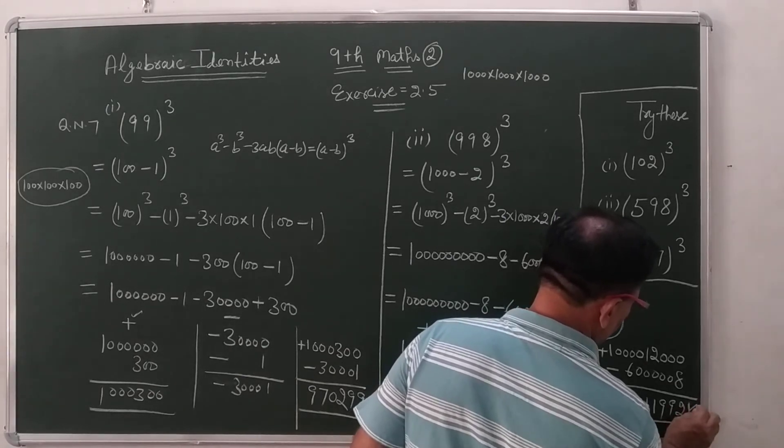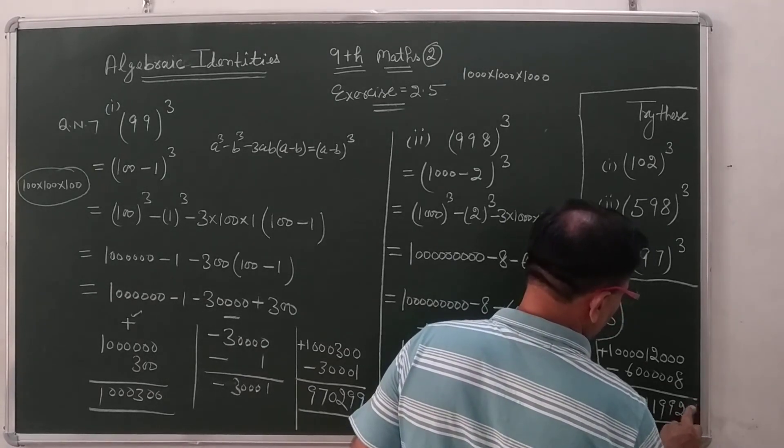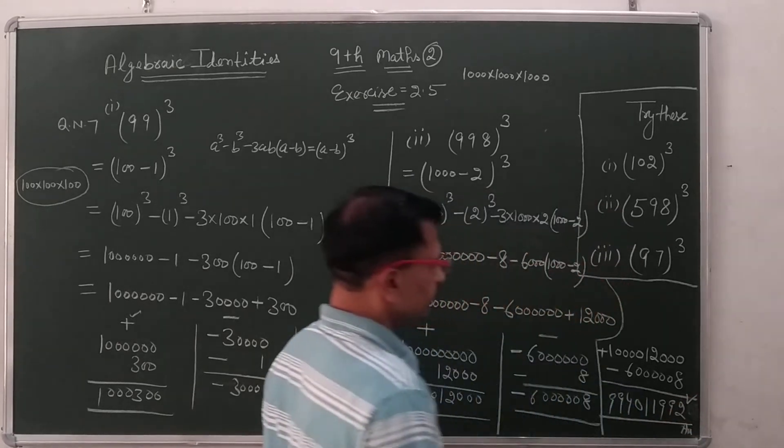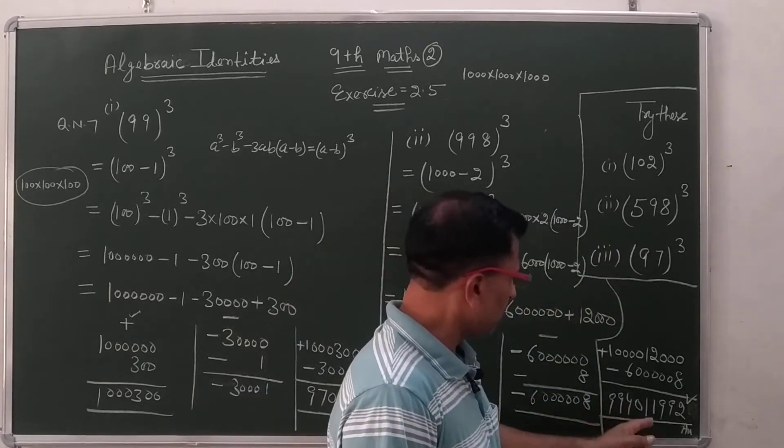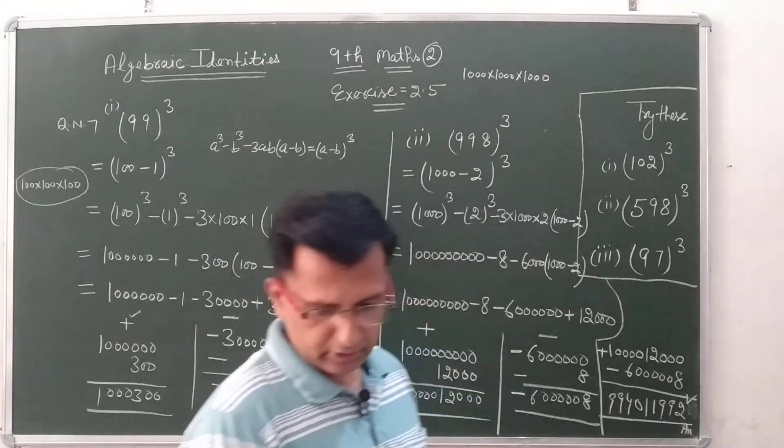1, 0, 0, 4, 9, 9. It is the answer. Ye amara answer. 99, 4, 0, 1, 1, 9, 9, 2. It is the answer.